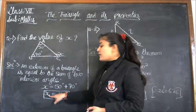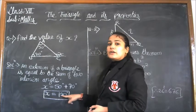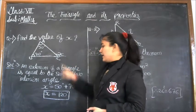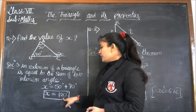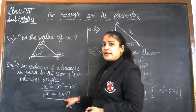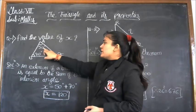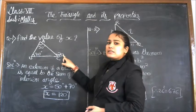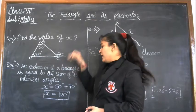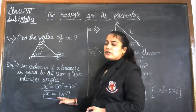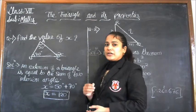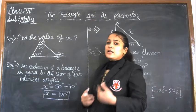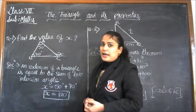50 degrees plus 70 degrees gives us 120 degrees. So the value of x is 120 degrees. These are the two interior angles and x is the exterior angle, found to be 120 degrees through this method.